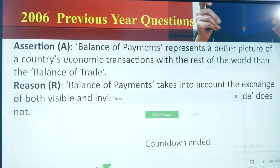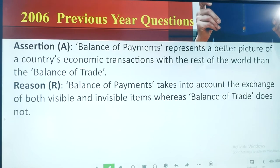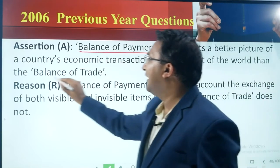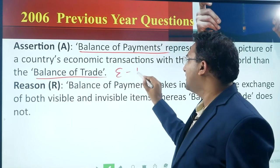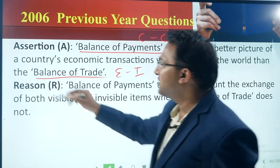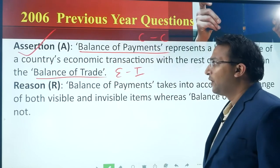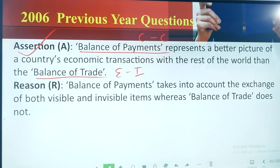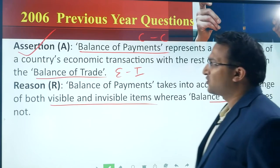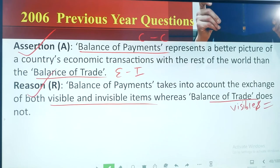Assertion: balance of payments represents a better picture of a country's economic transactions with the rest of the world than the balance of trade. Balance of payments is much more comprehensive than balance of trade. Reason: the balance of payments takes into account the exchange of both visible and invisible items, whereas balance of trade takes into account only visible items. Both assertion and reason are correct.